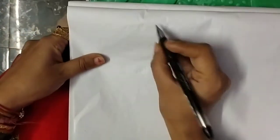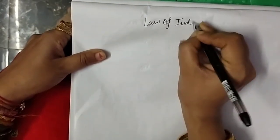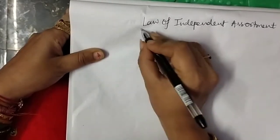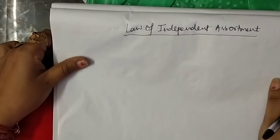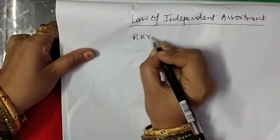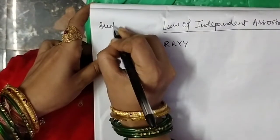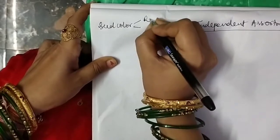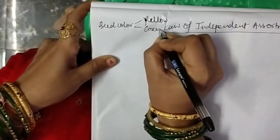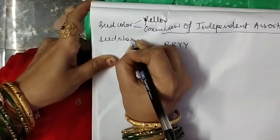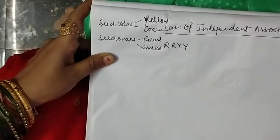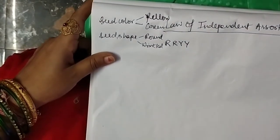Now we are going to discuss the third law of Mendel: the law of independent assortment. It is based on two gene inheritance, meaning Mendel took two pairs of contrasting characters. These two pairs are seed color — yellow and green — and seed shape. These are the two features which Mendel used to conduct this cross.